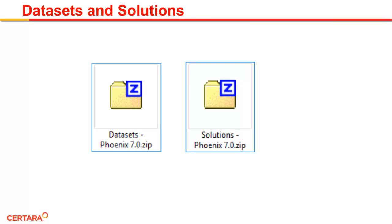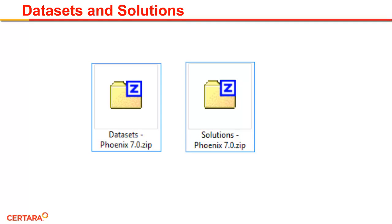There are two zip files that you will need to download and extract for this course. To perform the exercises you will need access to files from the datasets folder. For each exercise there is a saved project file in the solutions folder. There is no requirement for you to use the project in the solutions folder, but they are there in case you want to examine them.